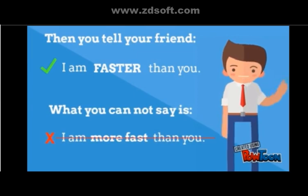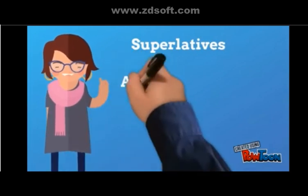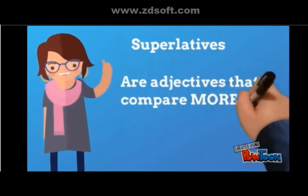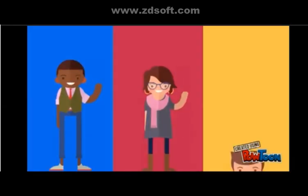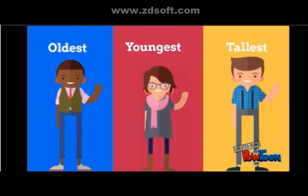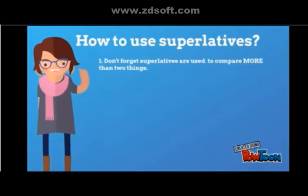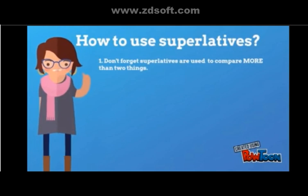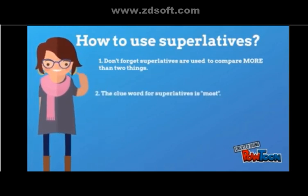Moving on — superlatives are adjectives that compare more than two things, like comparing three people to see which one is the oldest, the youngest, and the tallest. How to use superlatives: first, don't forget superlatives are used to compare more than two things.